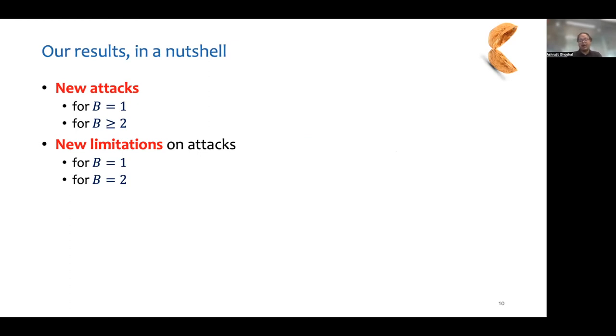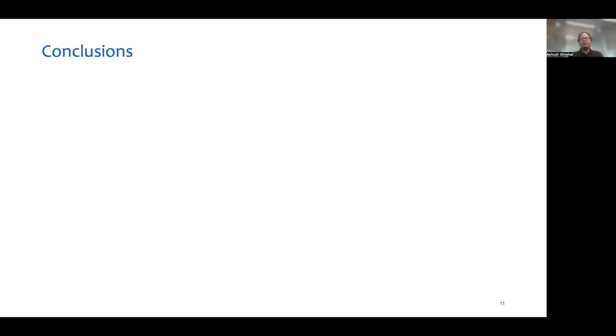For both B equals 1 and 2, our bounds are not tight, which gives rise to several open problems. The two main takeaways of our work are, first, the inverse queries are useful in sponge to give new and better attacks.